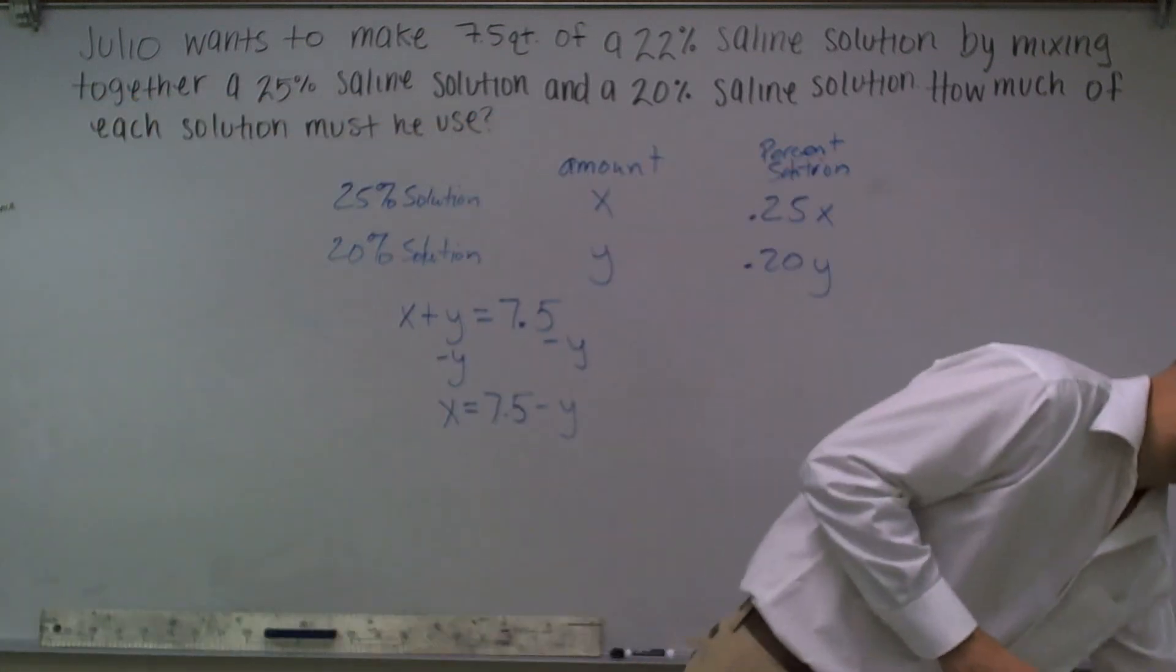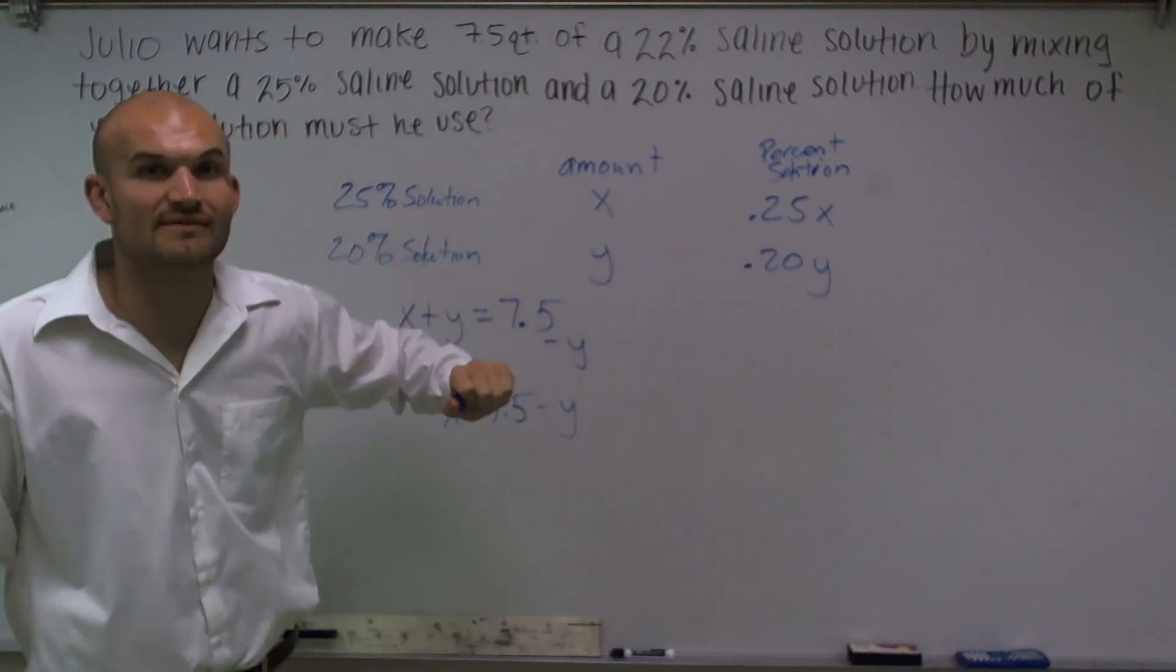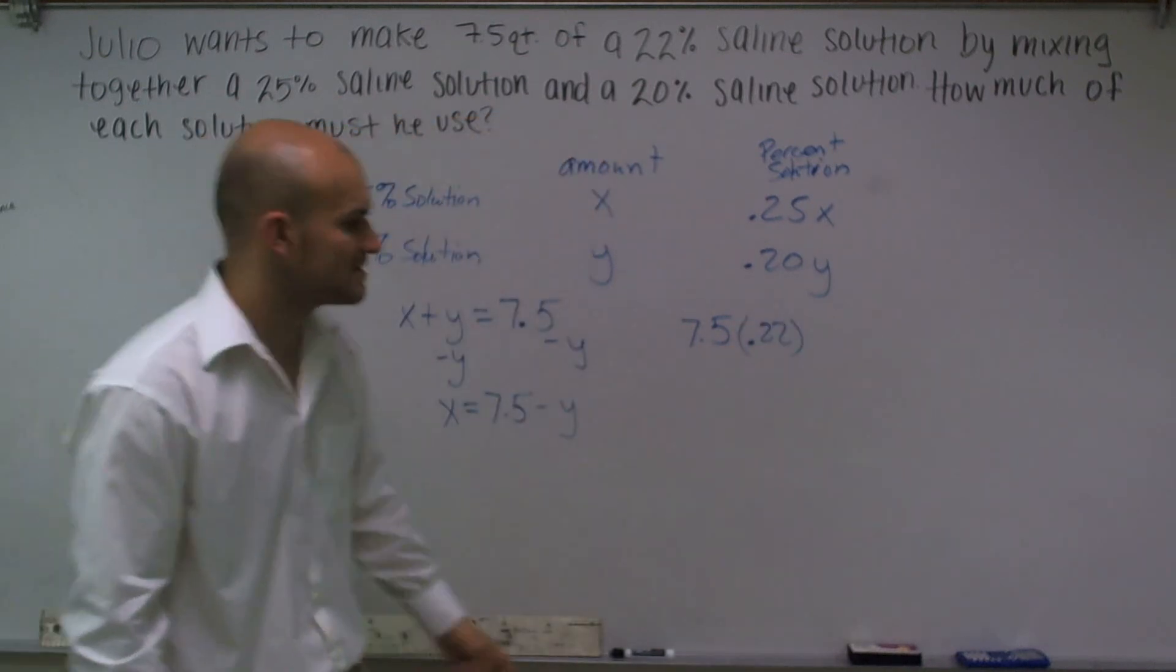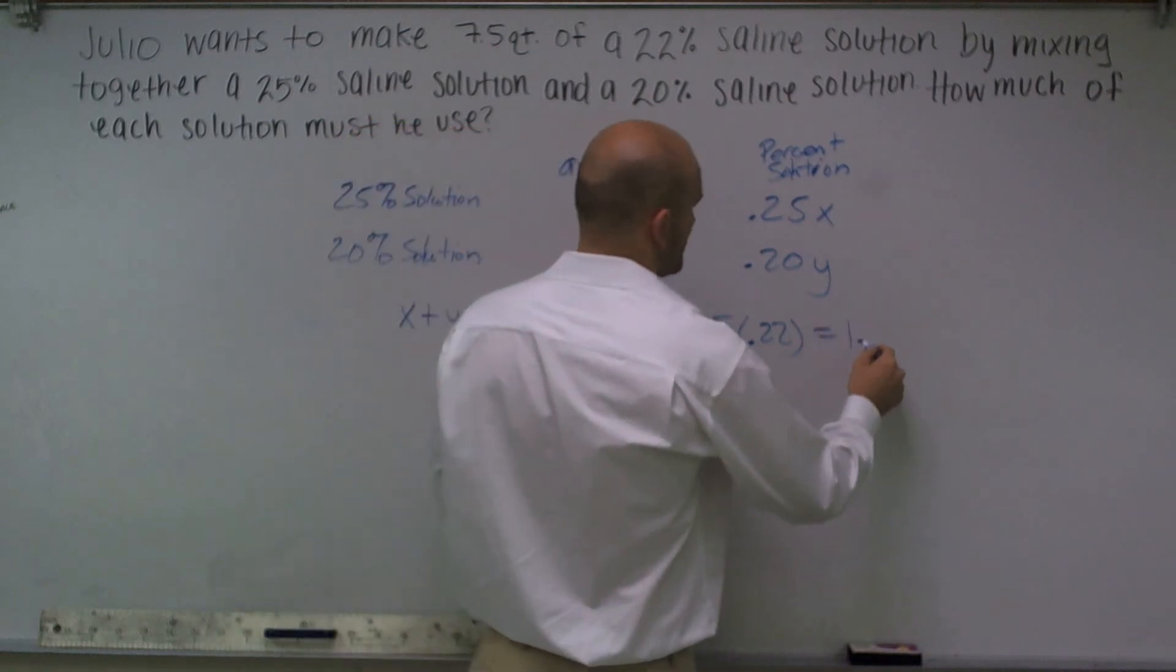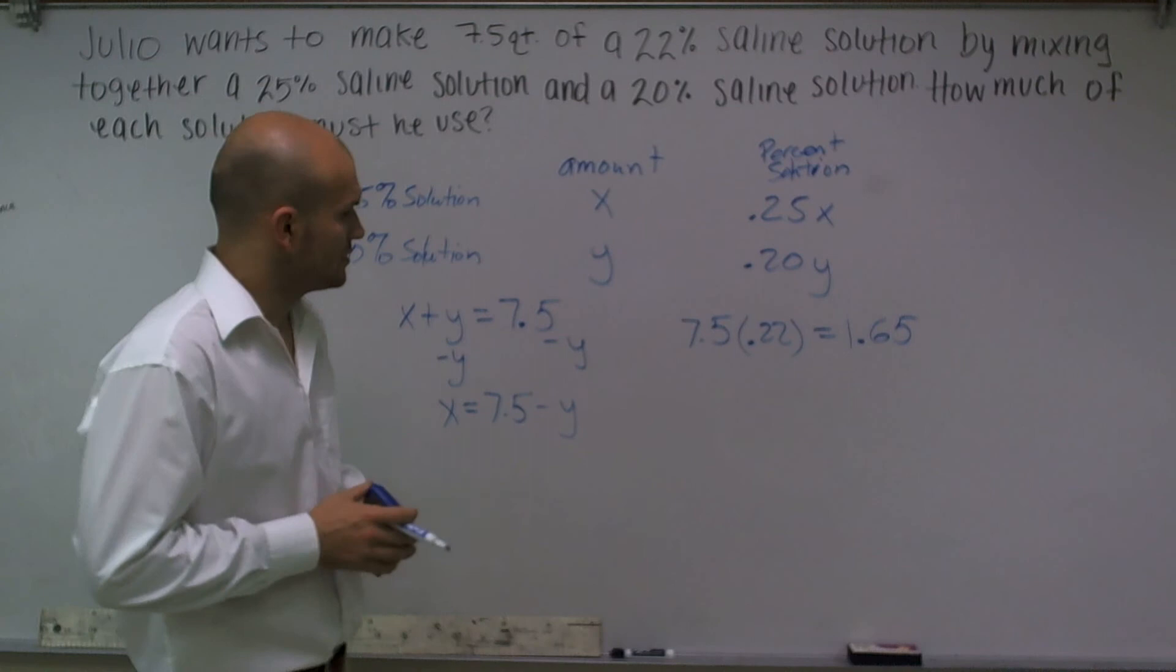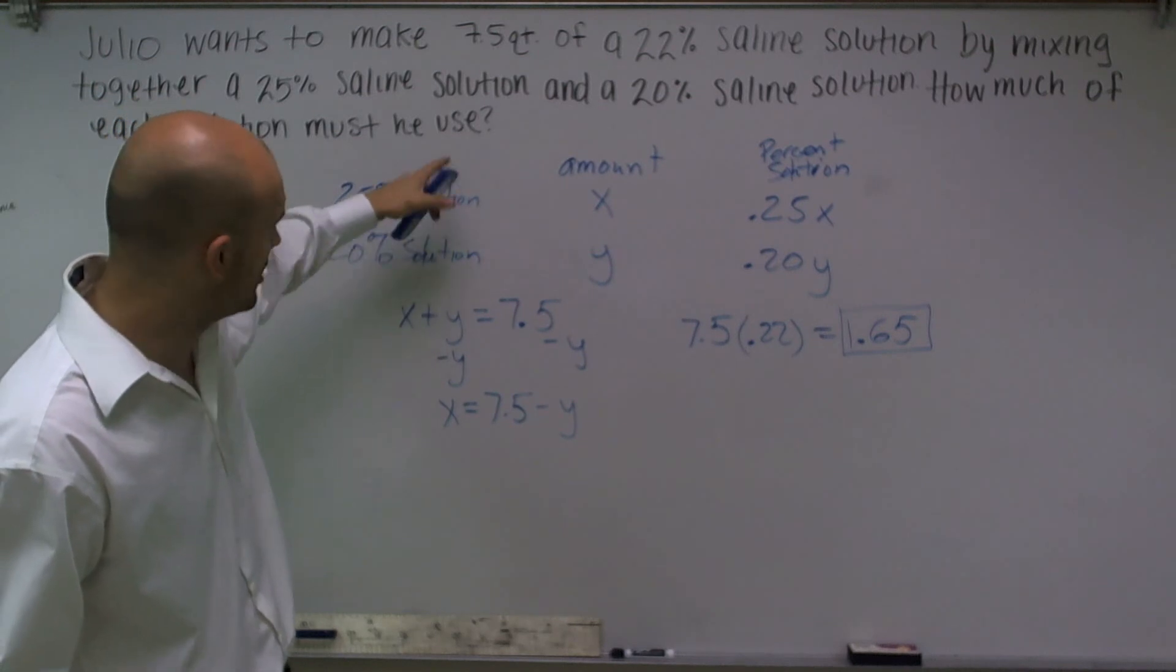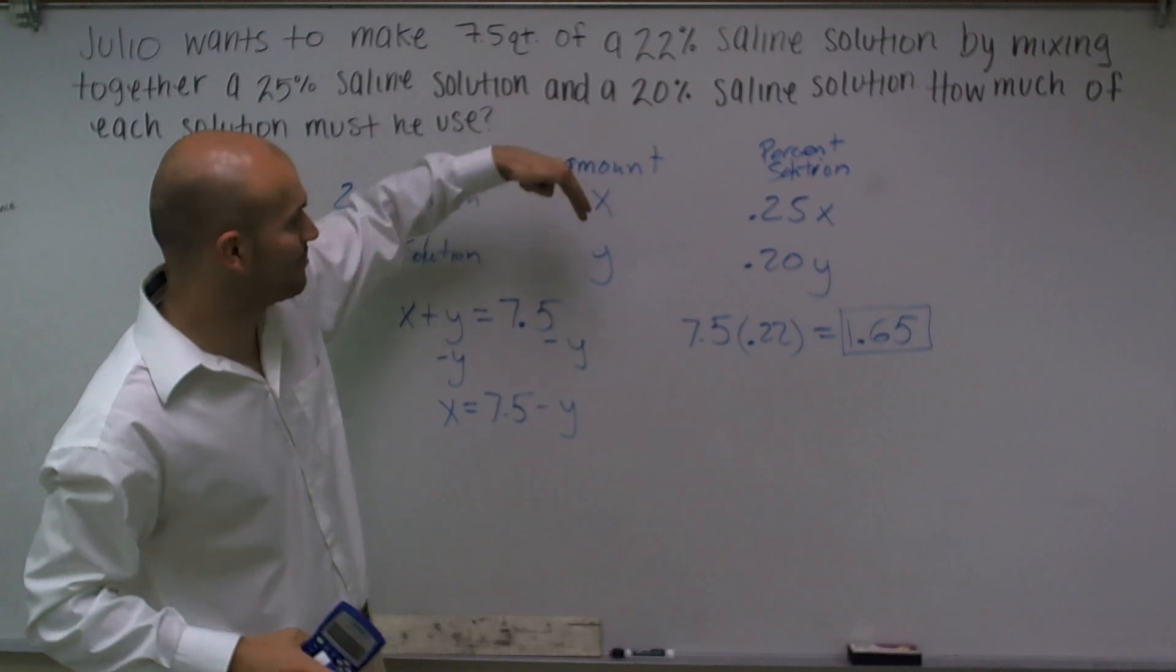Now, what I'm going to do is I need to understand, well, what is the solution he wants? He wants a 22% solution out of that 7.5 quarts. So I can take my 7.5 quarts and I want a 22% solution of that. So I'm going to multiply 7.5 times .22. And when doing that, I get 7.5 times .22 is going to equal 1.65, which is going to be the percent of my saline solution of the total. So what I can do now is if here's my total that I'm going to want, I'm going to want a percentage of my 25% solution plus my 20% solution. So I want to add this amount plus this amount equals that amount.